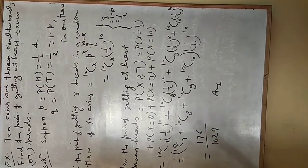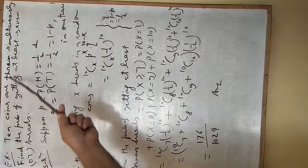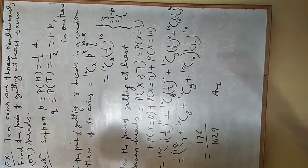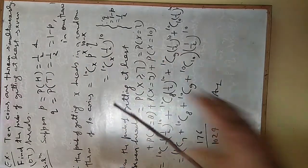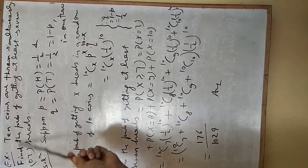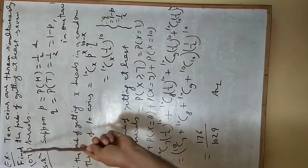Let us see an example. 10 coins are thrown simultaneously and we need to find the probability of getting at least 7 heads.